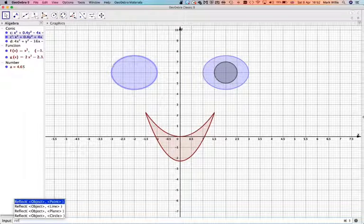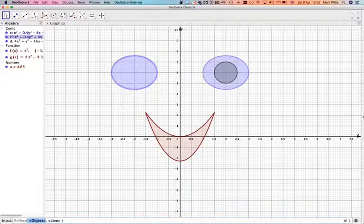Reflect, object line. So that will be my D. Okay, so you just have to take account of what things are called, because these are all up here. That's C, and this one has been called D. All right, depends what it calls them.